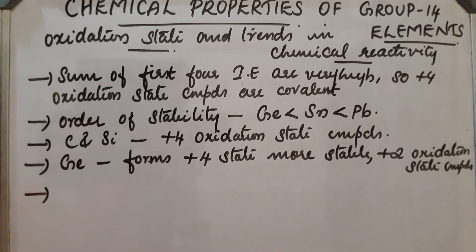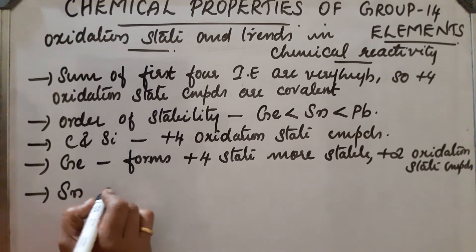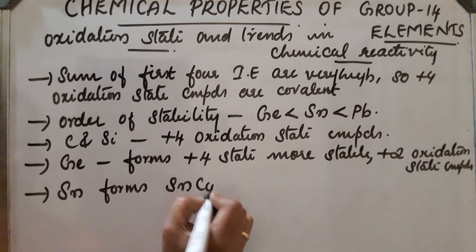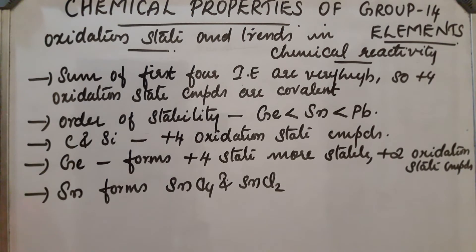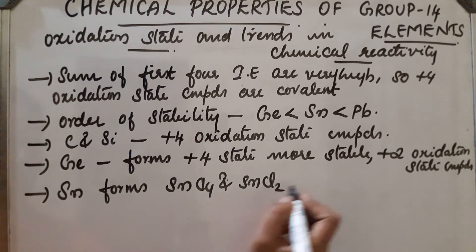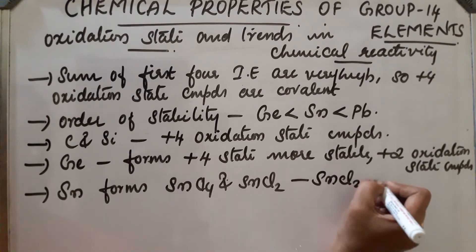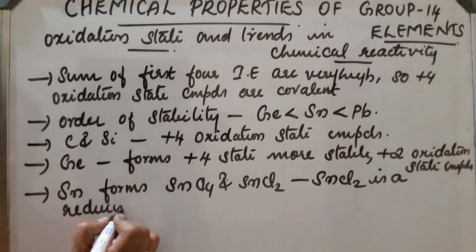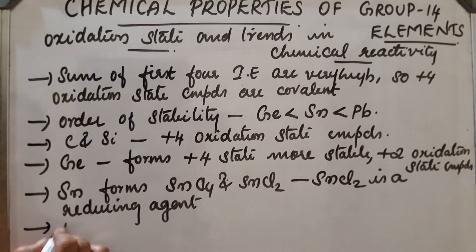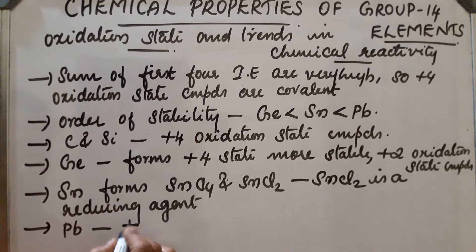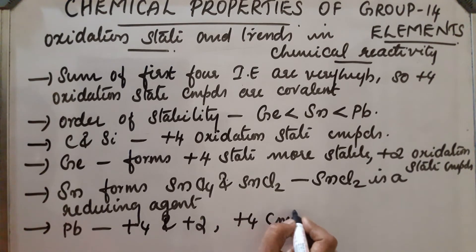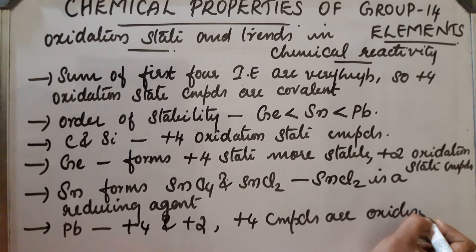In the case of tin, it forms SnCl4 and SnCl2, where tin has plus 4 and plus 2 oxidation states respectively. SnCl2 is more stable and acts as a reducing agent. Lead also forms both plus 4 and plus 2 oxidation state compounds, but plus 2 is more stable. Plus 4 compounds of lead are oxidizing agents.